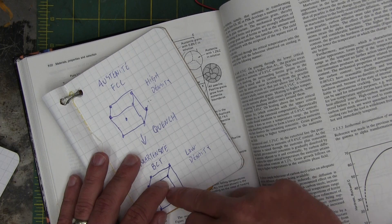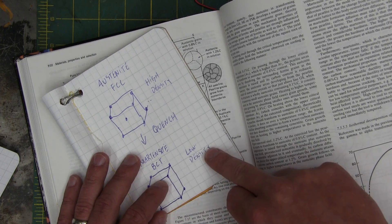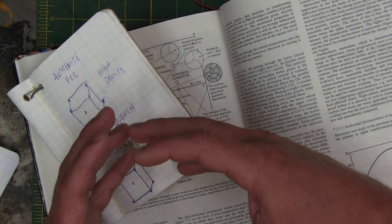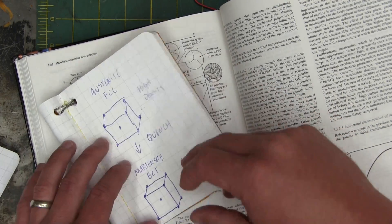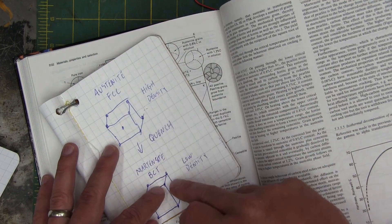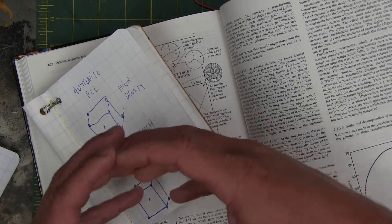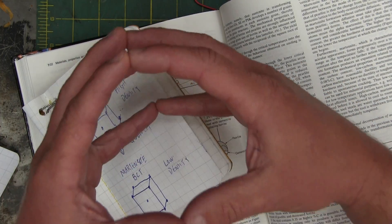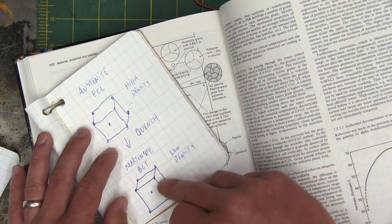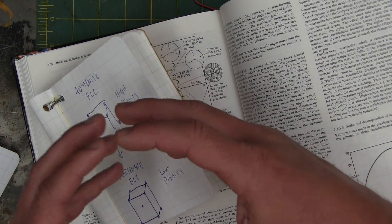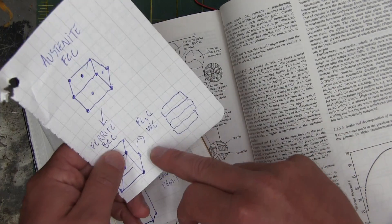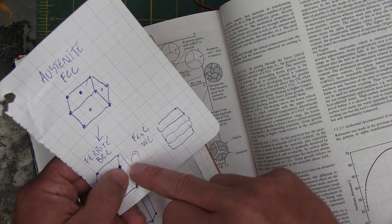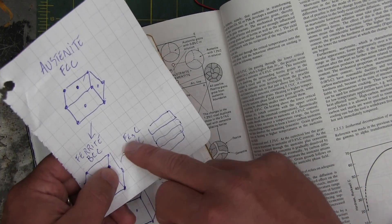One, because it's a lower density, it needs to expand. Two, because there's a whole bunch of carbon atoms still in solution that want to get the fuck out. But they can't because they're locked rigidly by this crystal lattice structure. It's no longer movable. They can't move. They can't migrate. The carbon atoms can't migrate the way they did here when they had time to do it.